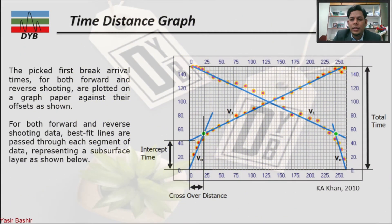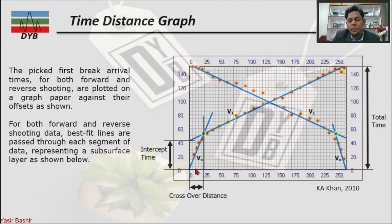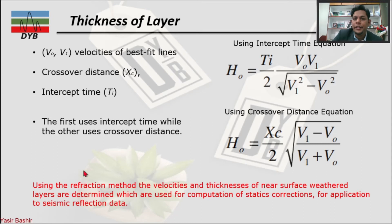Once you pick the first break, you plot those first breaks on a time-distance graph. Forward shooting picks are plotted on one side and reverse shooting on the other. Then you pass the best fit line: the first best fit line gives V0 (velocity of the first layer) and the second best fit line gives V1. After that, you find the thickness of the layer.